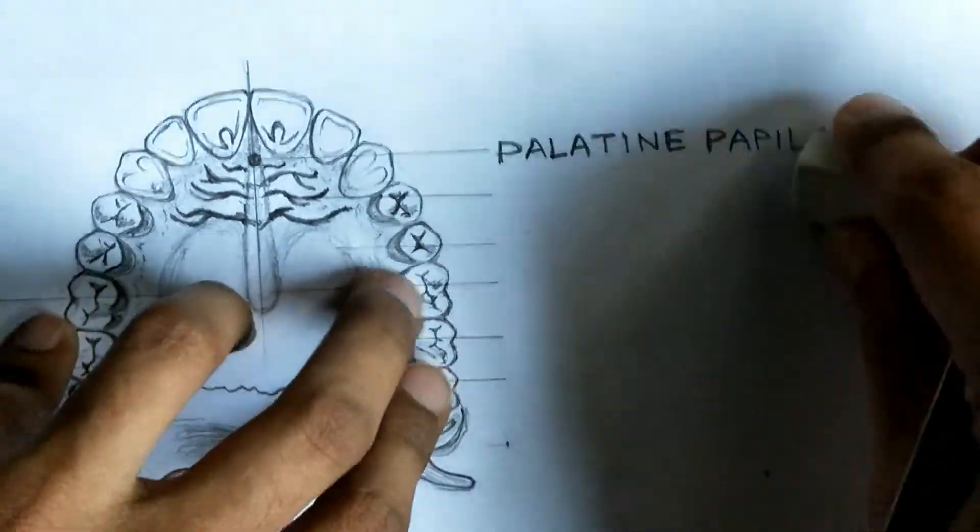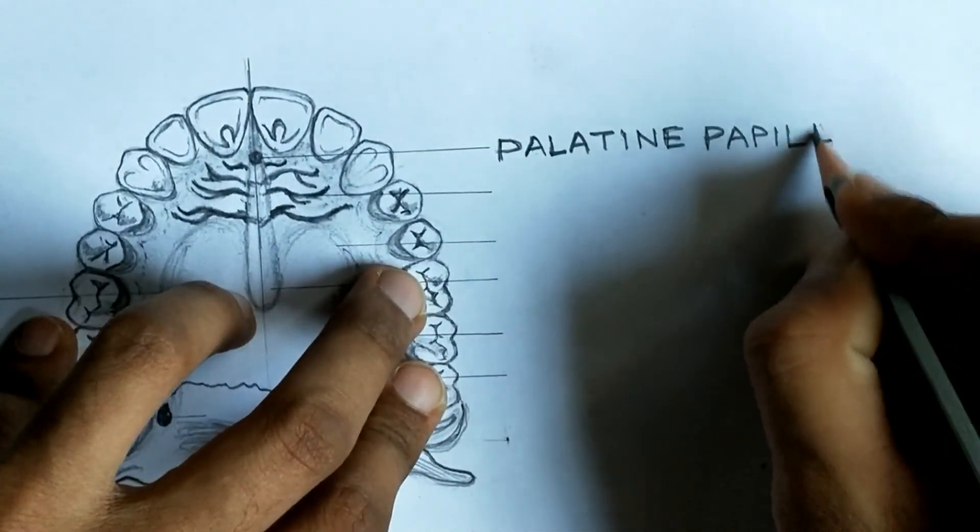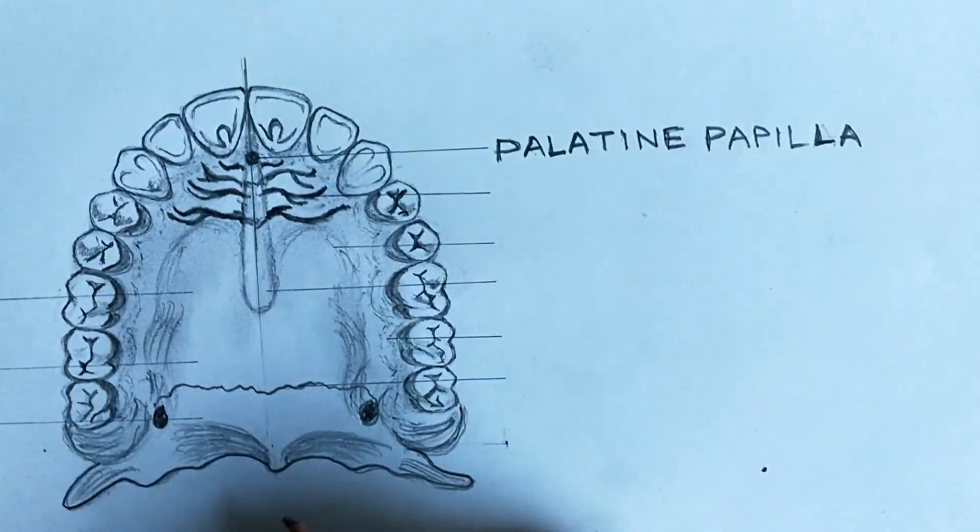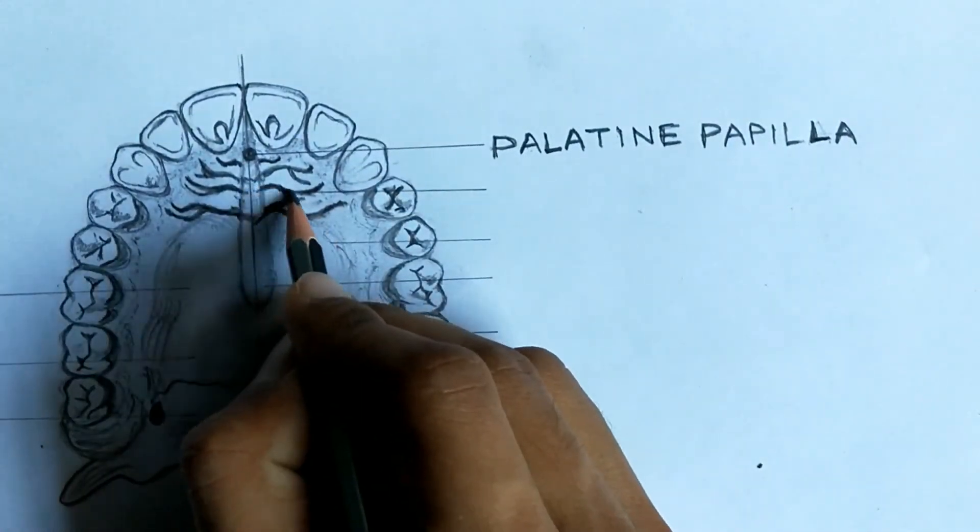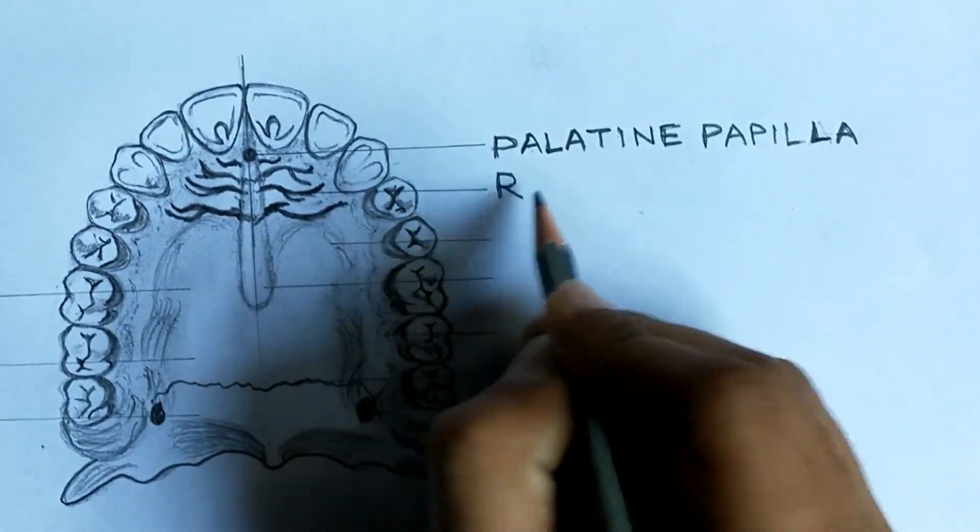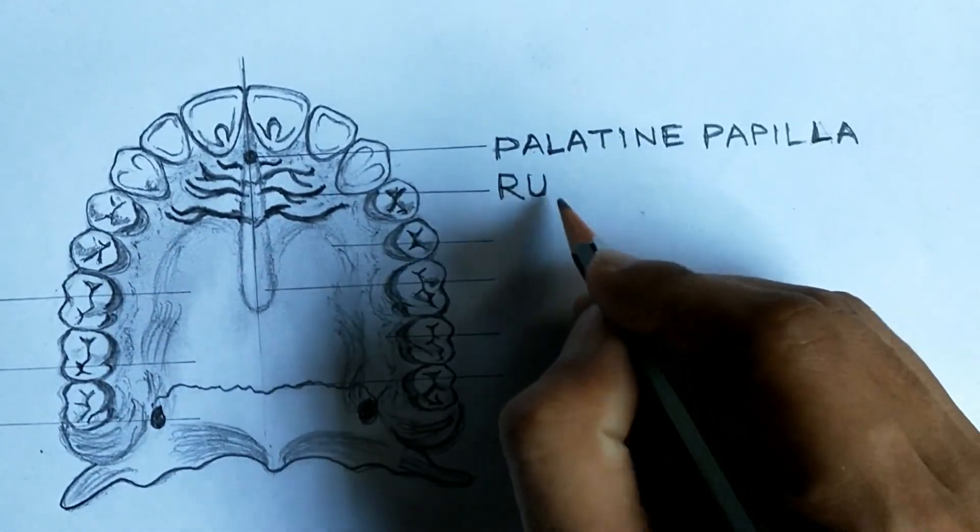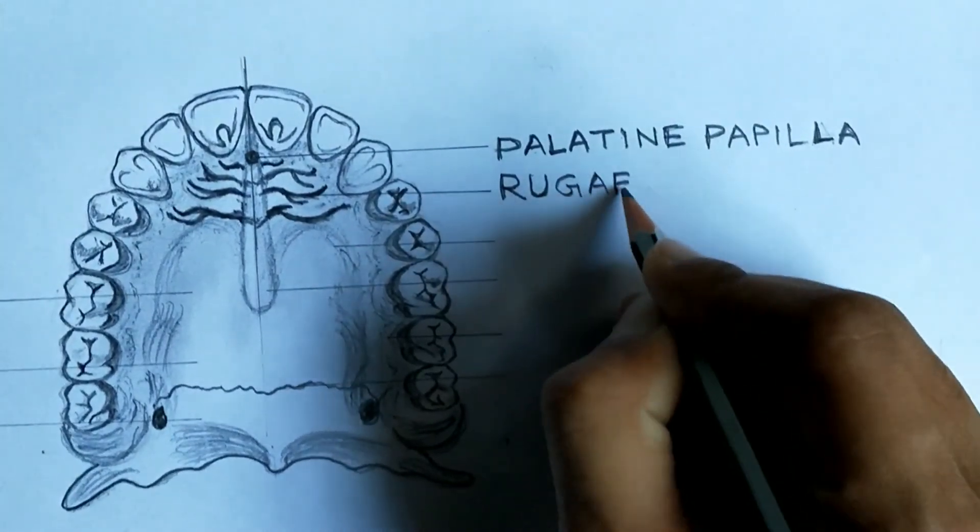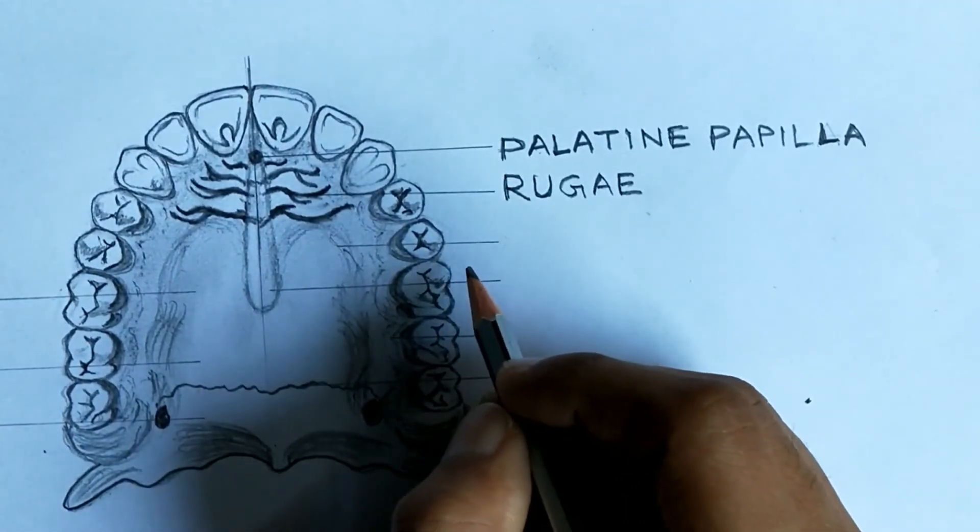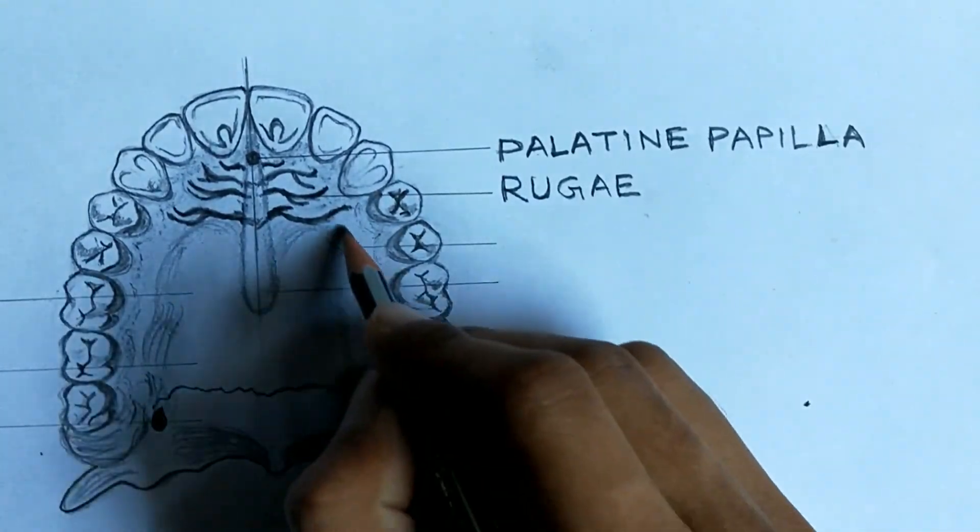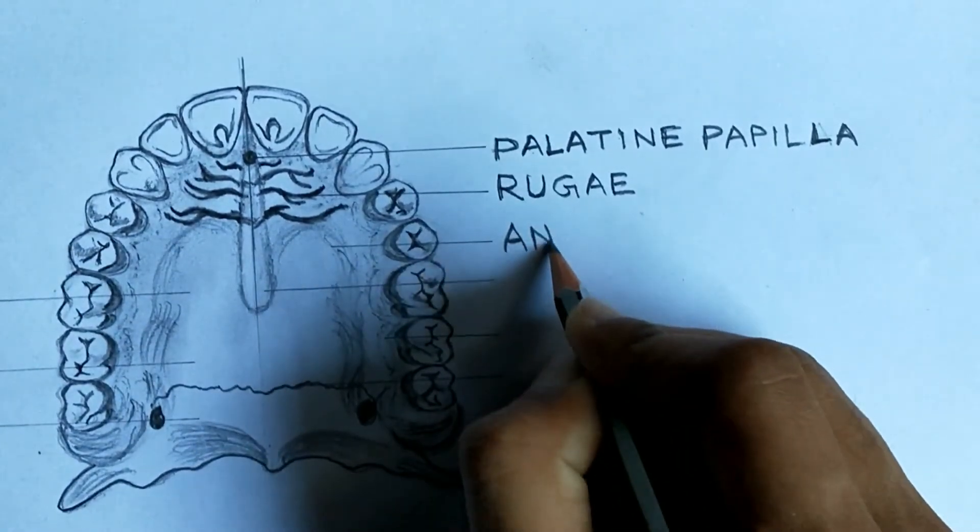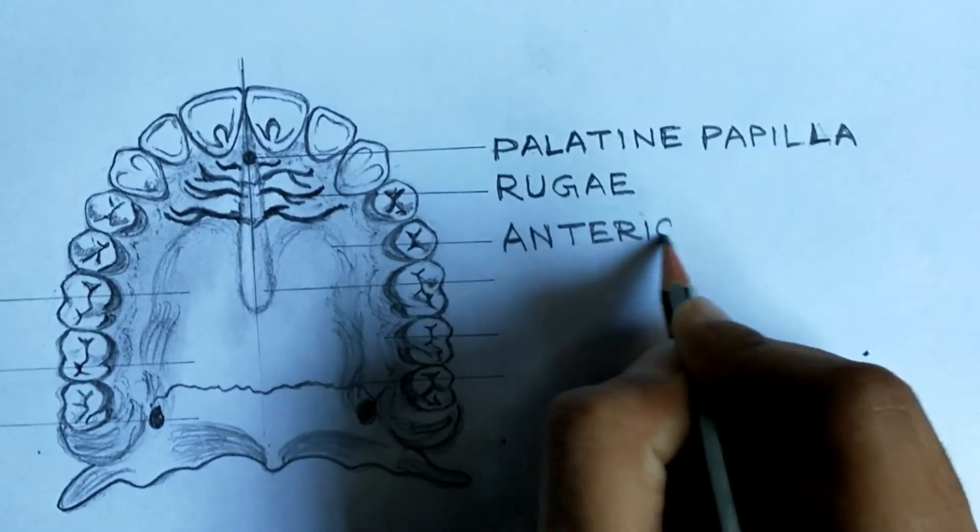Now we know the location of the regions of palate. First, palatine papilla. Here, this oval-shaped structure is the palatine papilla. Next, rugae. You see irregular asymmetric ridges of mucosa on both sides. Rugae.